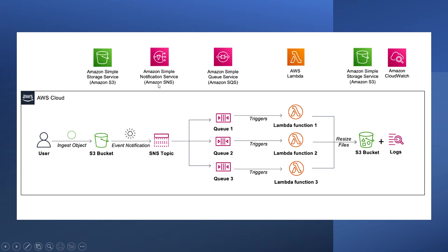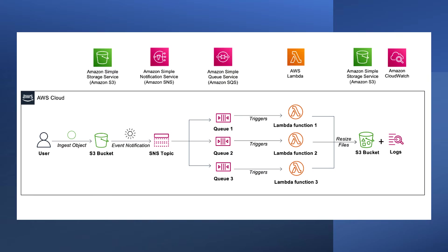As you can see in this diagram, the workflow is as follows: first, we upload an image file to the S3 bucket. Uploading a file to the ingest folder in the bucket invokes an event notification to the Amazon SNS topic. Amazon SNS then distributes the notification to three separate queues — Q1, Q2, and Q3. The Lambda functions process the images in three formats and store the output in the S3 bucket. We then validate the processed images in the S3 bucket folder and the logs in Amazon CloudWatch.